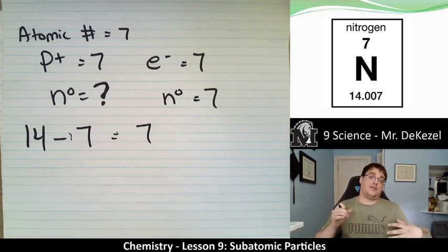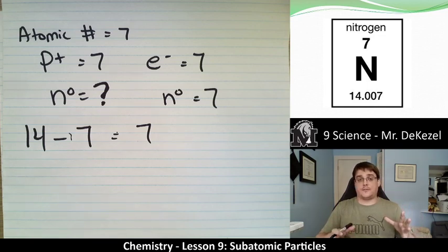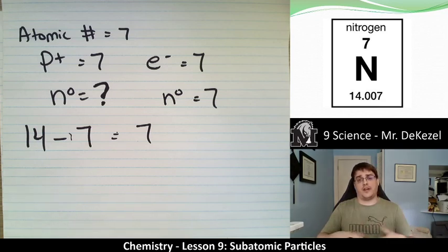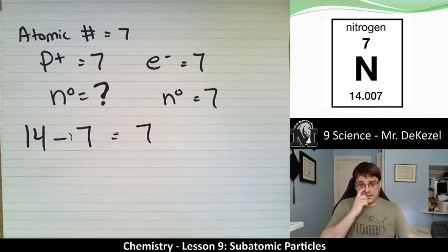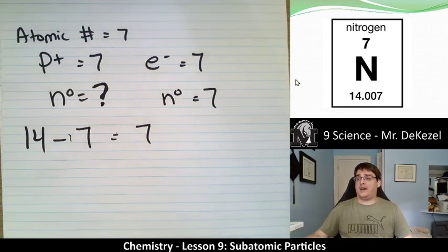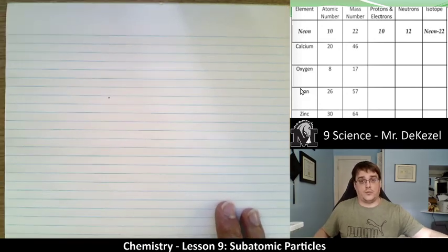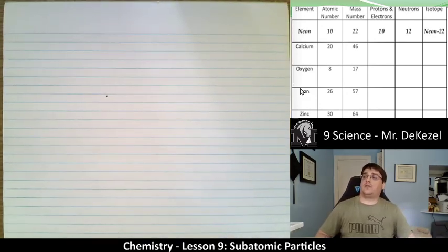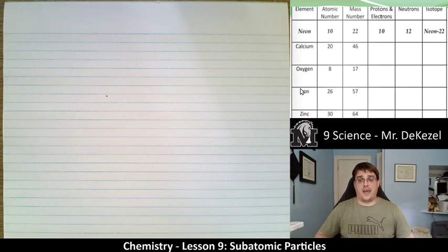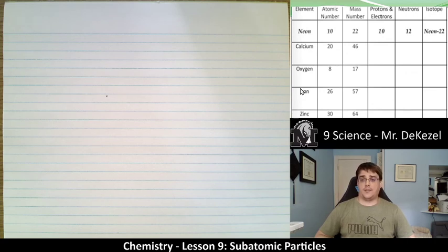We can do that with any element on the periodic table. We see the atomic number and atomic mass, and we can find out how many protons, electrons, and neutrons it has. Let's do some examples. Neon has atomic number 10 and atomic mass 22, so it has 10 protons and 10 electrons. 22 minus 10 is 12 neutrons. We write this as Neon-22 — that's the isotope notation.